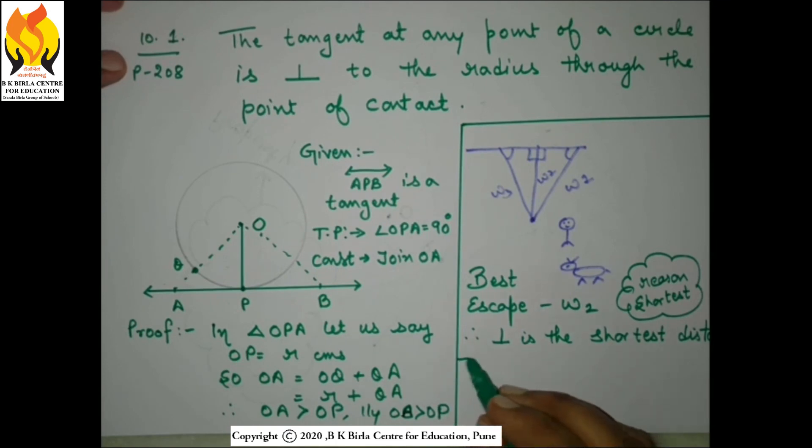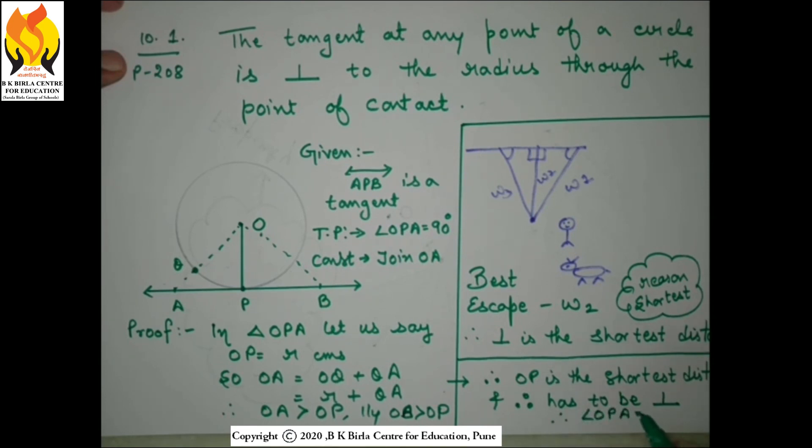Which means that our OP is less than both OA as well as OB, so it is the shortest distance. And we know that the shortest distance has to be the perpendicular distance. So our angle OPA has to be 90 degrees. Hence it is proved.